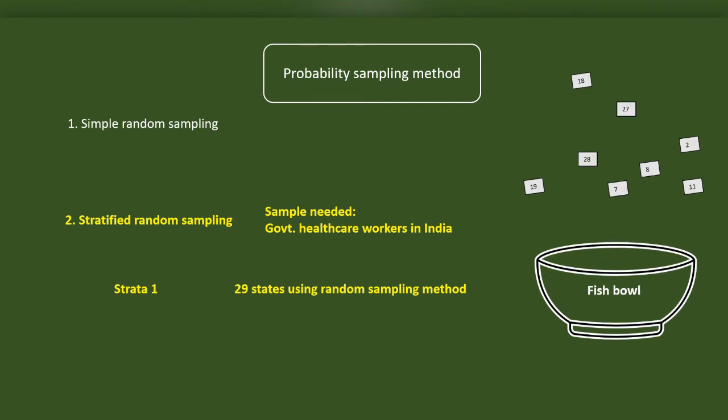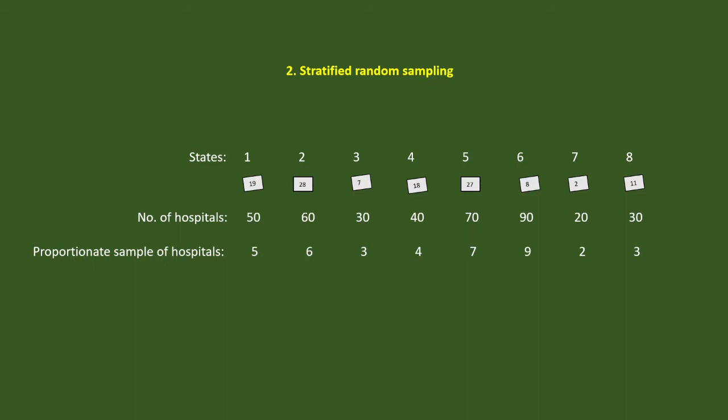Now imagine that in the first state, there are 50 hospitals. In the second, there are 60 hospitals. In the third state, there are 30 hospitals. And in the 4th, 5th, 6th, 7th and 8th states, there are 40, 70, 90, 20 and 30 hospitals respectively.